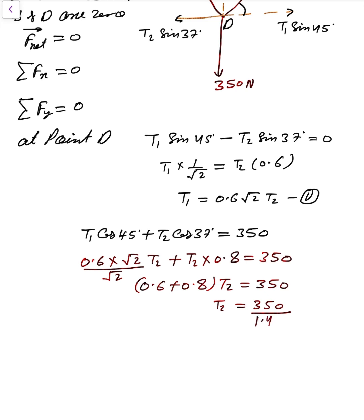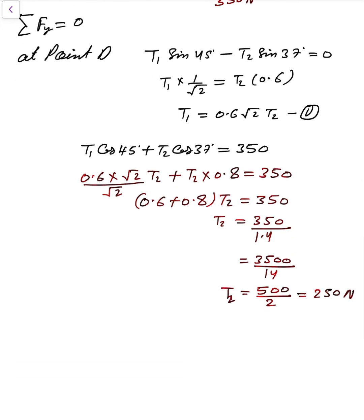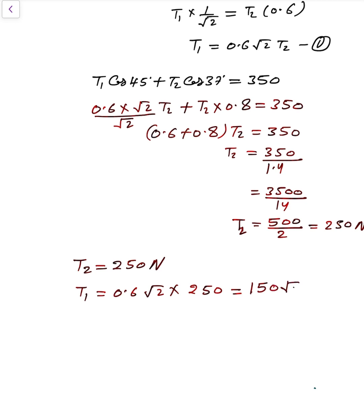Solving: T2 = 350 ÷ 1.4 = 250 N. Substituting back into equation 1: T1 = 0.6 × √2 × 250 = 150√2 N. So we have found T1 = 150√2 N and T2 = 250 N.